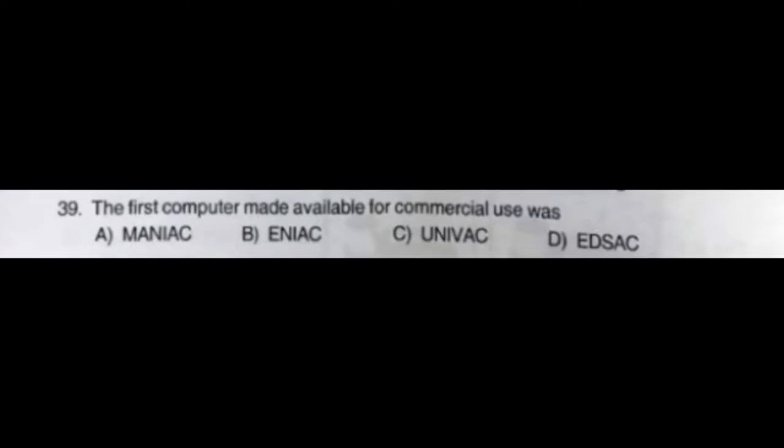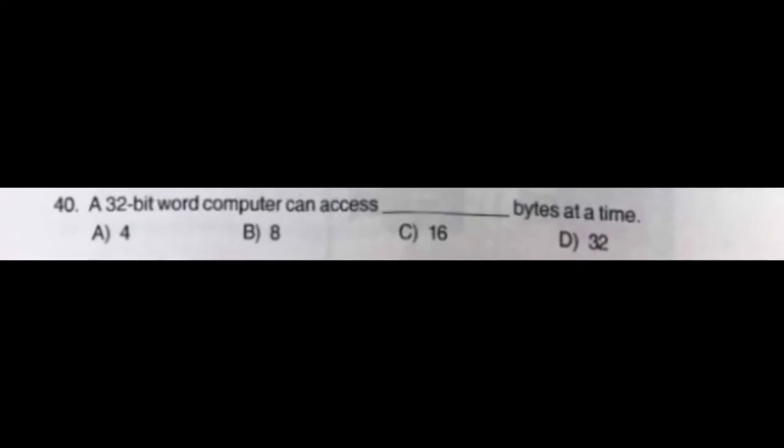Question number thirty-nine: The first computer made available for commercial use was — option A: MANIAC, option B: ENIAC, option C: UNIVAC, option D: EDSAC. The correct answer is option C: UNIVAC. Question number forty: A 32-bit word computer can access how many bytes at a time — option A: 4, option B: 8, option C: 16, option D: 32. The correct answer is option A: 4.